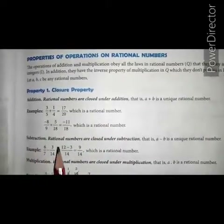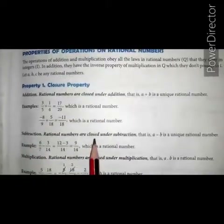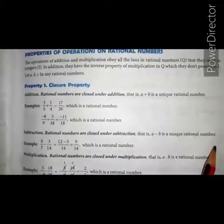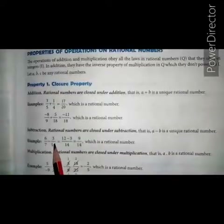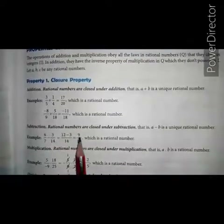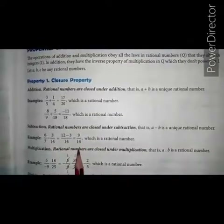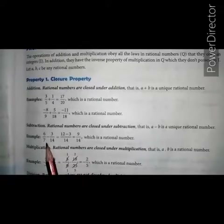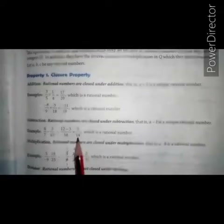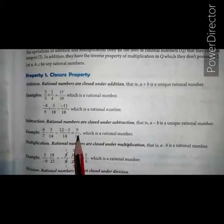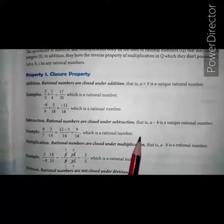Subtraction: Rational numbers are closed under subtraction. That is, a minus b is a unique rational number. It means on subtracting 2 rational numbers, we get a rational number. For example, 6 upon 7 minus 3 upon 14 equals to 9 upon 14, and 9 upon 14 is also a rational number.